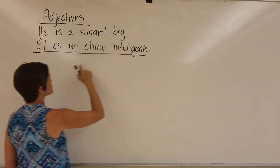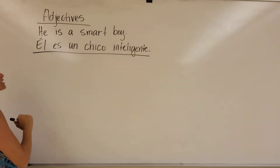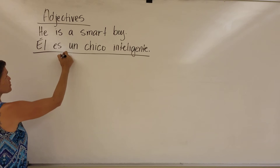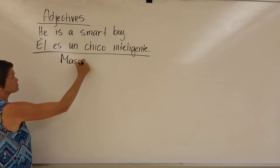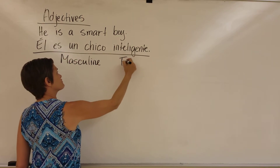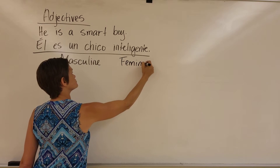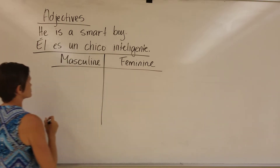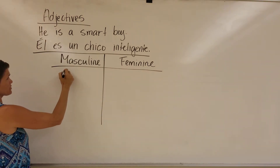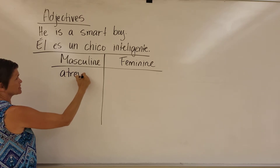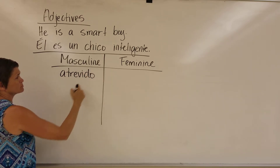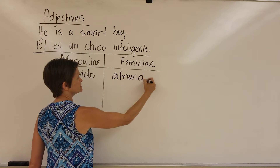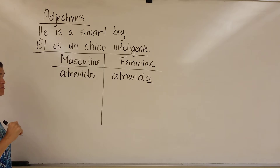Other than coming after the noun in a different order than English, adjectives in Spanish are also going to match up with what they're describing. There's both a masculine and a feminine form of adjectives. So if we have the word for 'daring,' it's 'atrevido' — but if a girl is daring, she is 'atrevida,' changing to the feminine form.